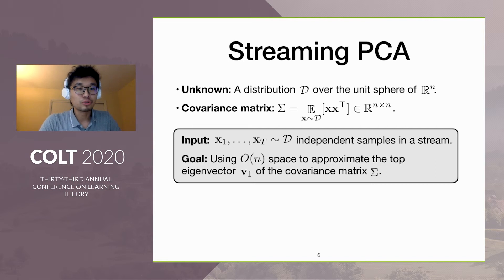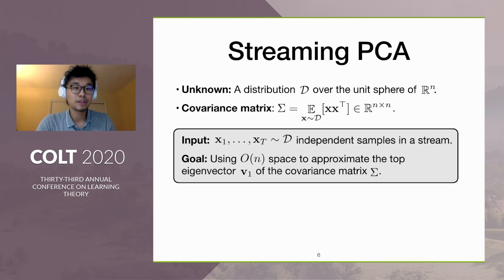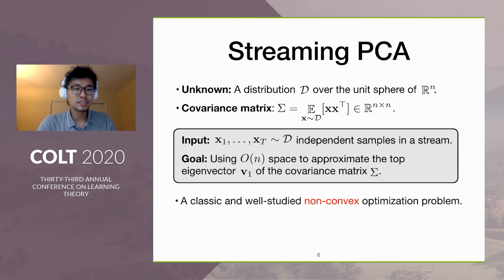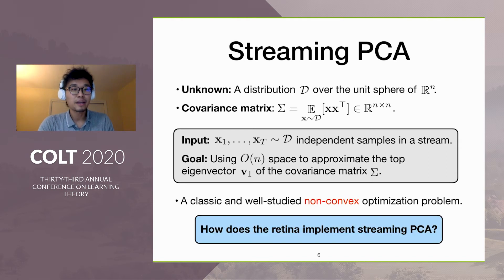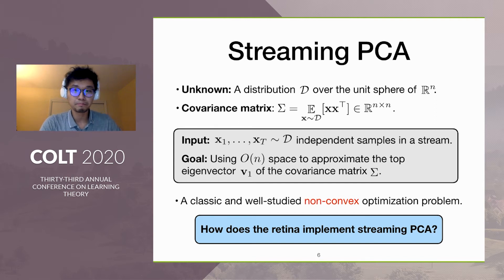The goal is to use only linear space to approximate the top eigenvector of the covariance matrix. This is a classic and well-studied non-convex optimization problem, and we are interested in how retina can implement streaming PCA to solve it.